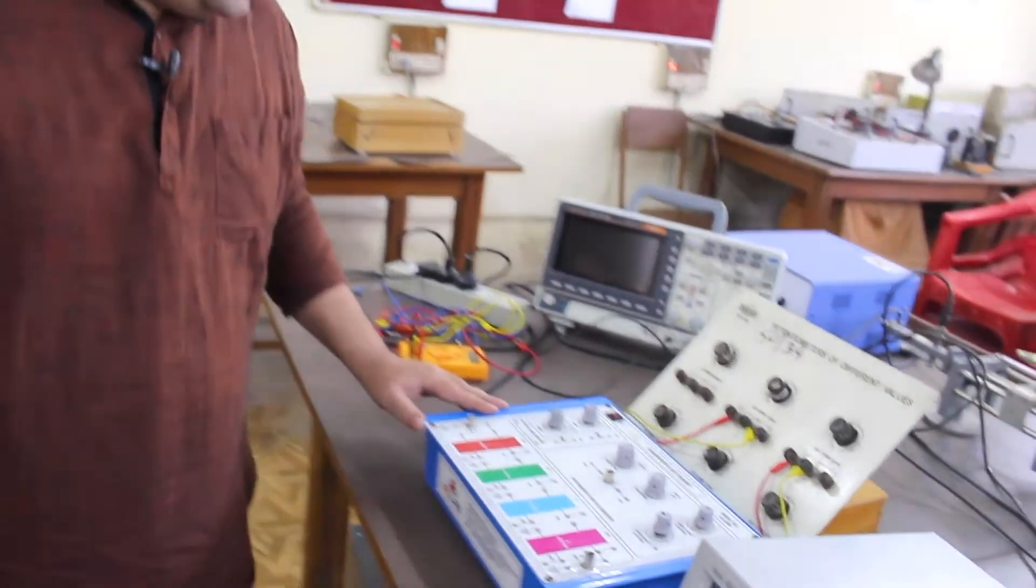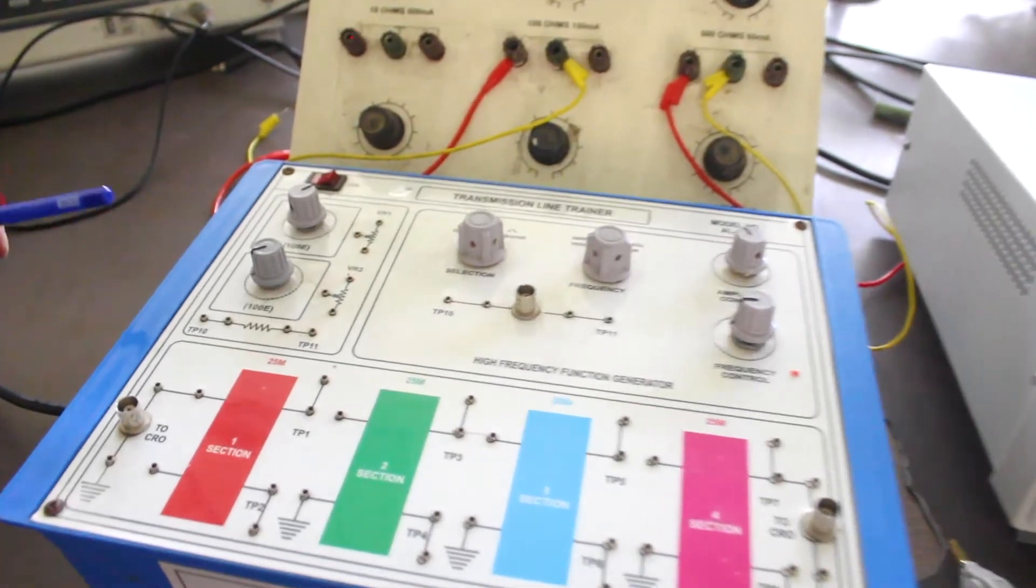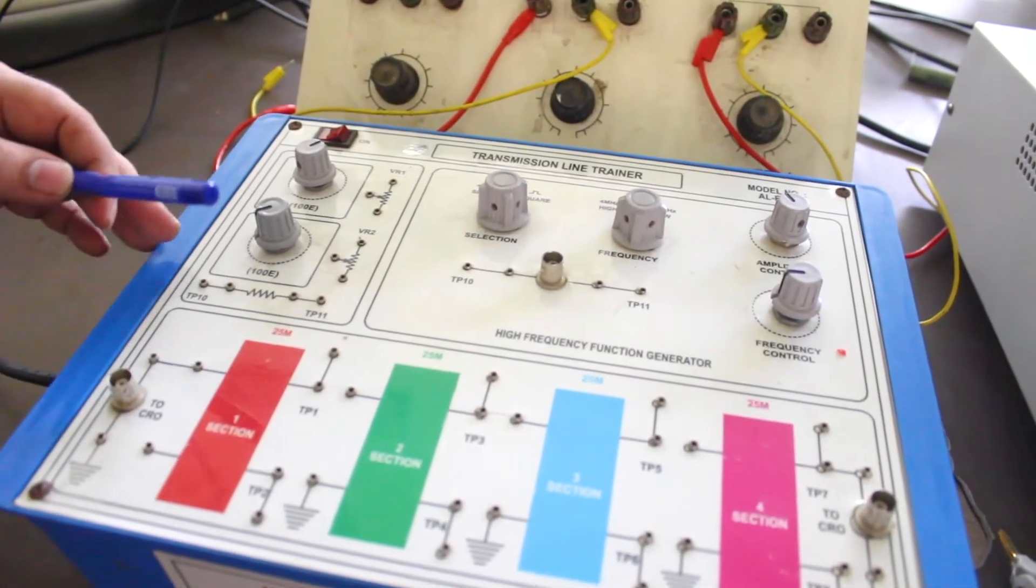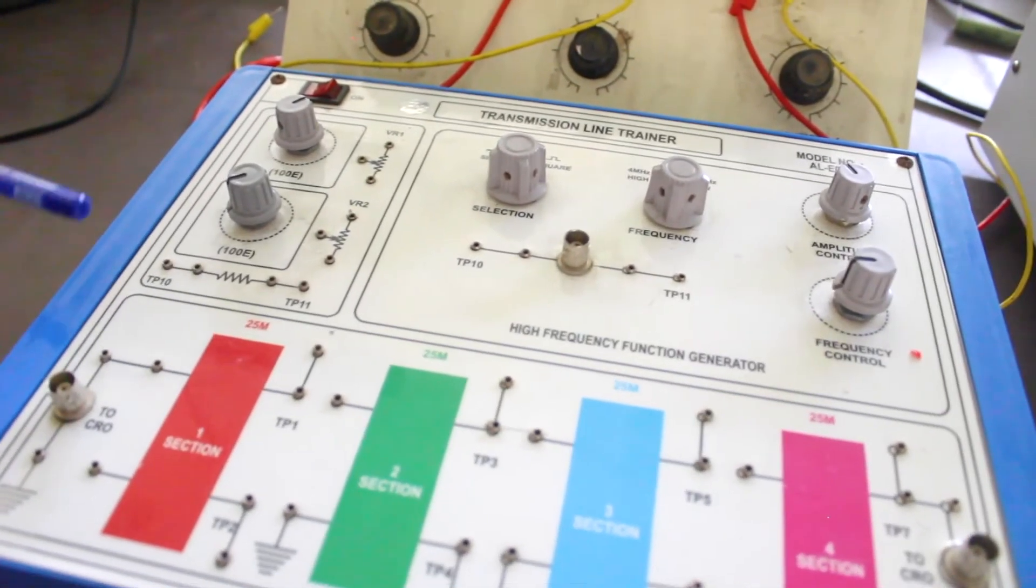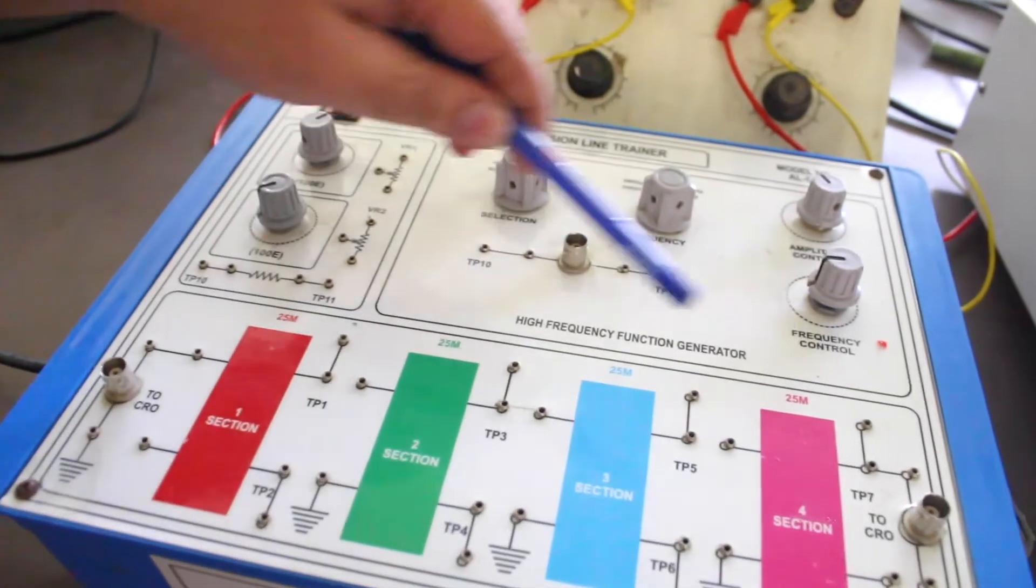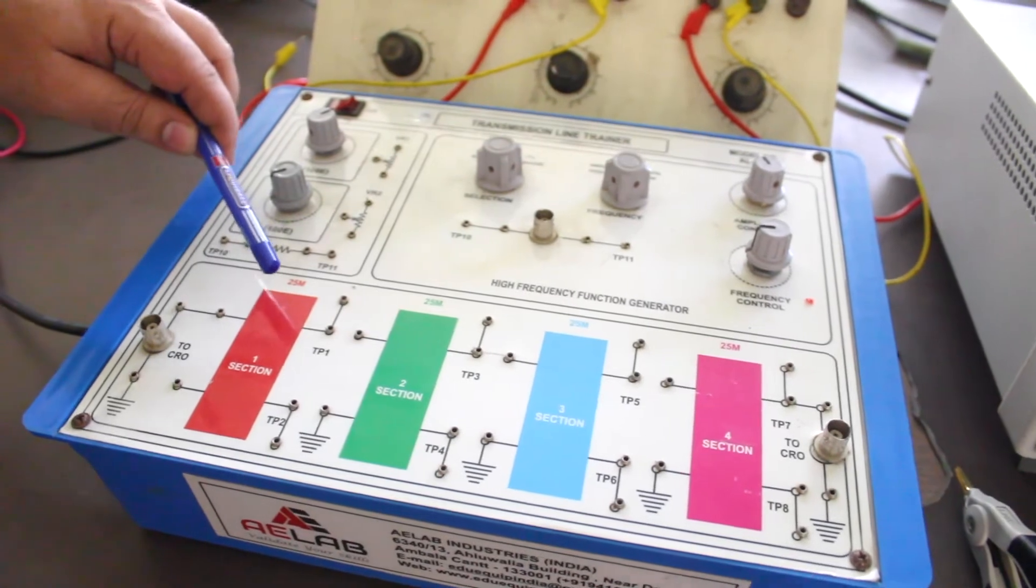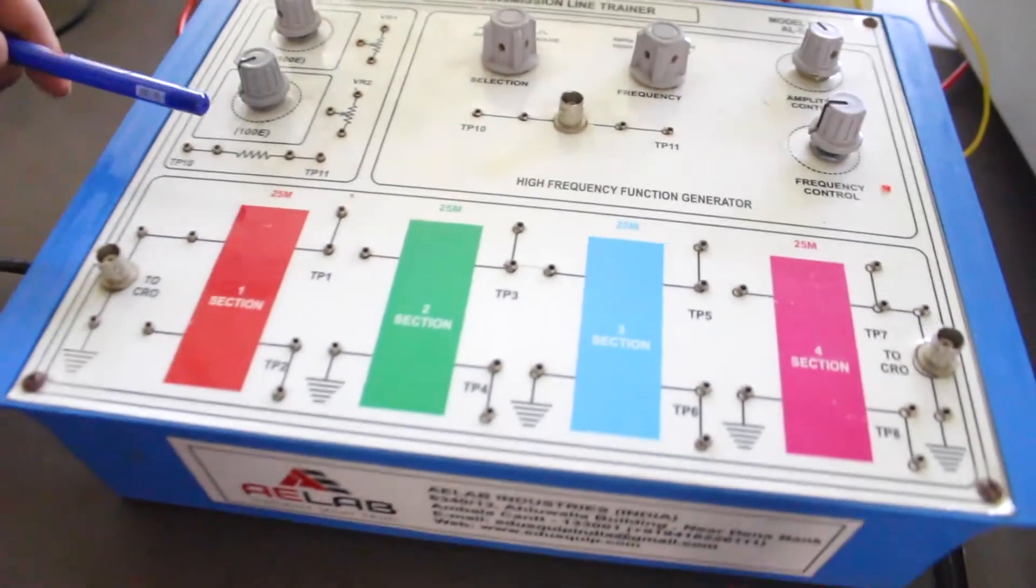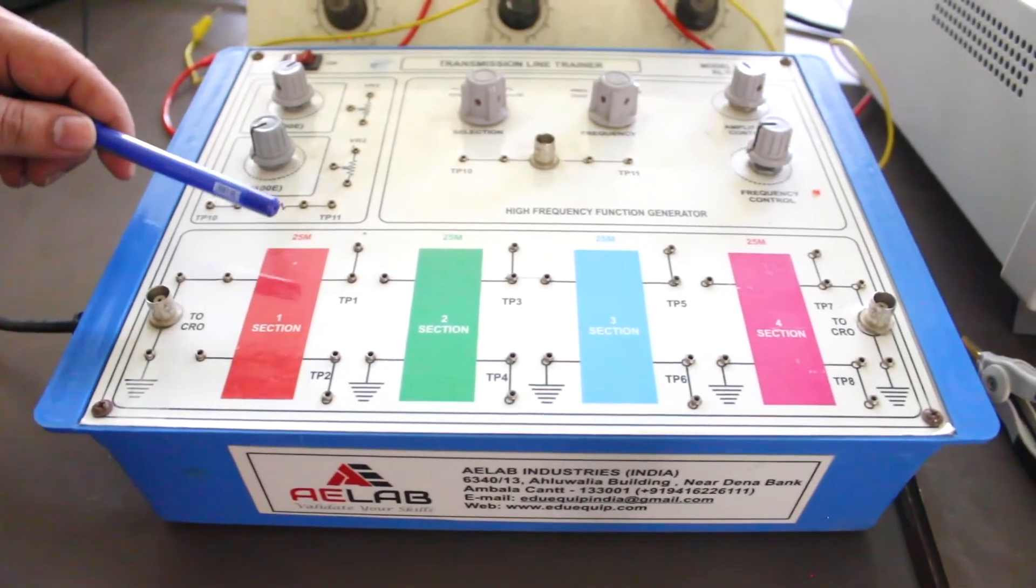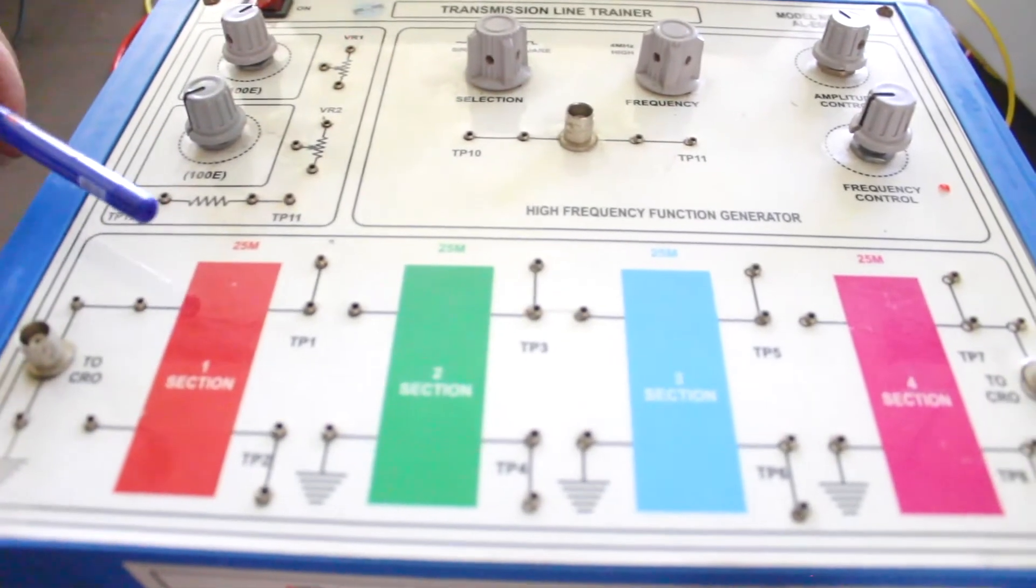First of all, I'd like to explain what is the kit for this practical. In this transmission line trainer kit we are having hundred meter length coaxial cable inside this kit so that it becomes compact and fits in this kit. We are having four sections, 25 meters each, and each section can be connected to the other sections.